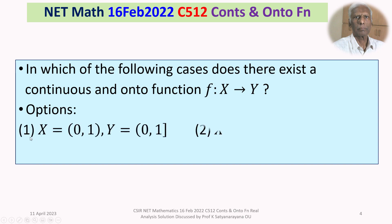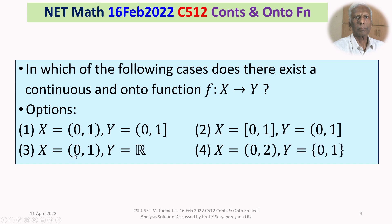We are given four options. Option 1: X is equal to the open interval (0,1), Y is equal to the semi-closed interval (0,1]. Option 2: X is equal to the closed and bounded interval [0,1], Y is equal to the semi-closed interval (0,1]. Option 3: X is equal to the open interval (0,1), Y is equal to the whole real number line R. Option 4: X is equal to the open interval (0,2) and Y is equal to the doubleton set {0,1}.